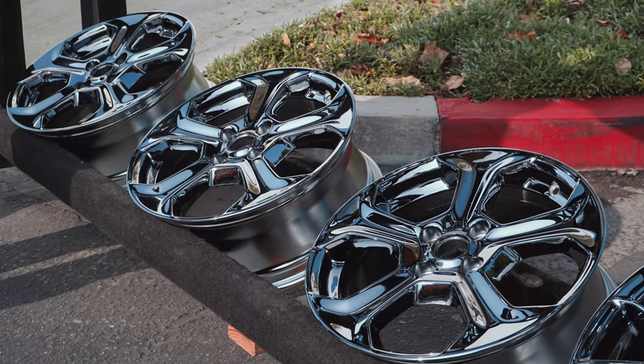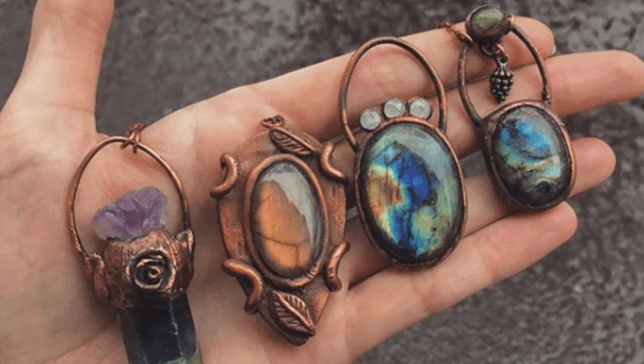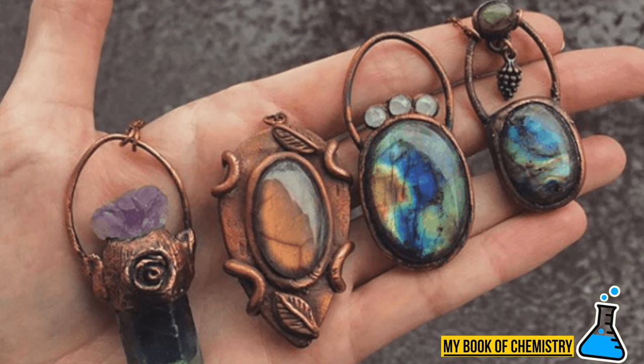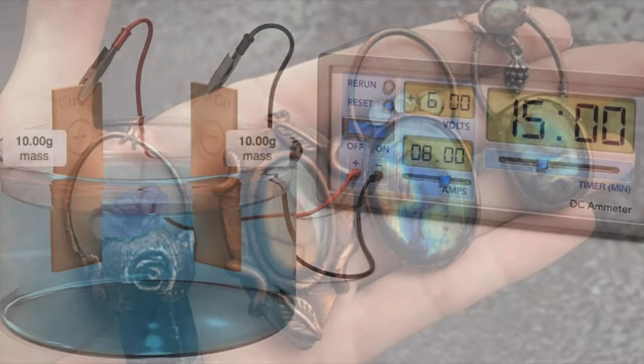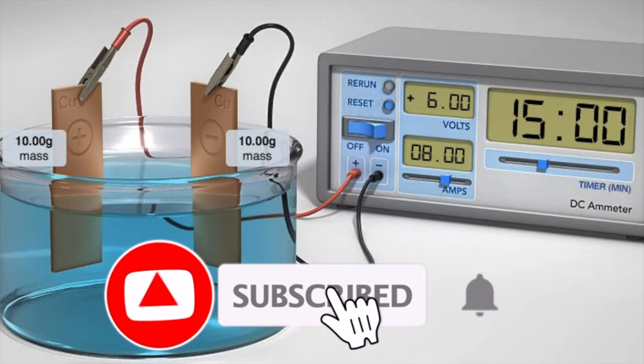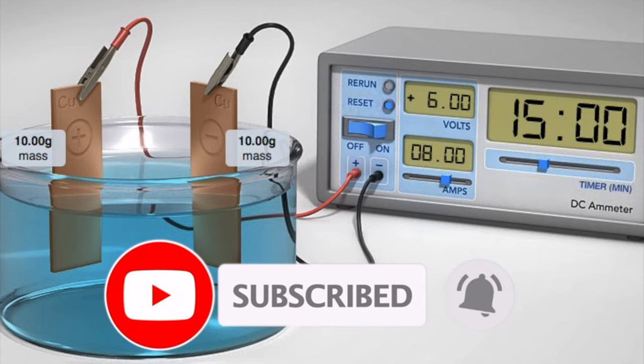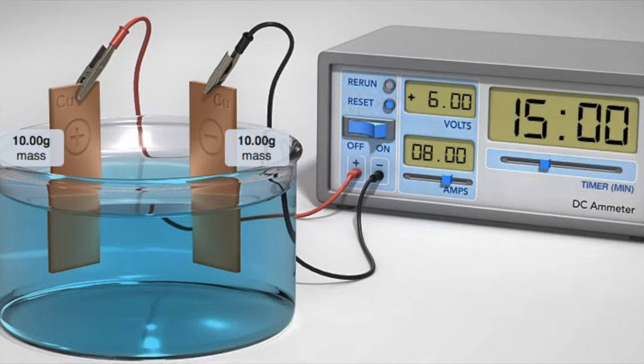Chromium plating on vehicle wheel rims and electroformed jewelries, what do they have in common? Well, they both use a chemical process called electrolysis. In this video, we will explore electrolysis process in chemistry.